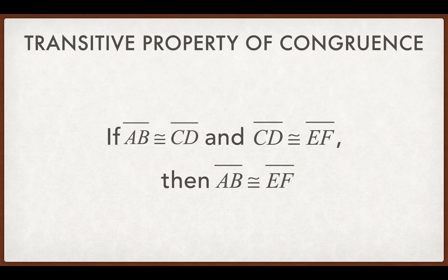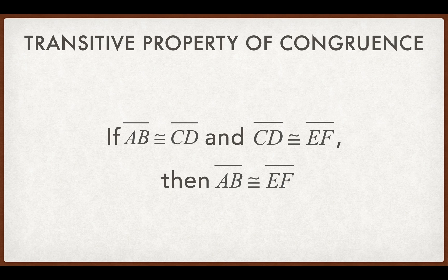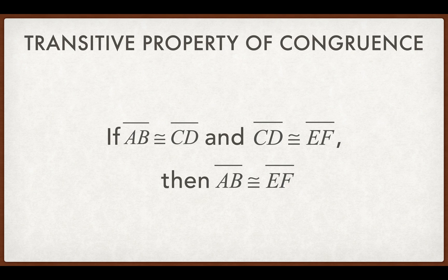Next, we have the transitive property of congruence. If we have three line segments, and line segment one is congruent to line segment two, and two is congruent to three, then the first and third one are congruent to each other.